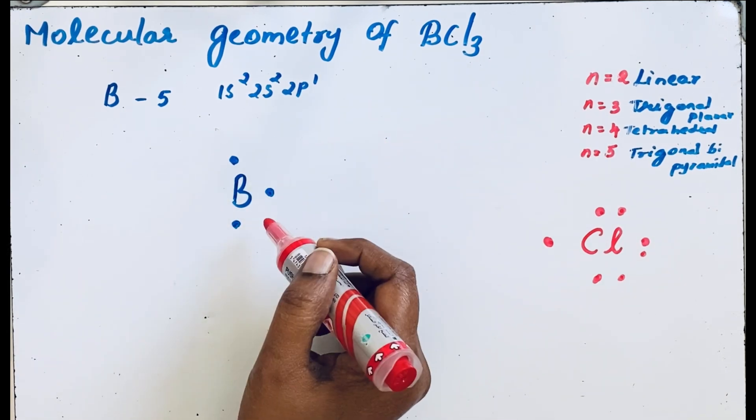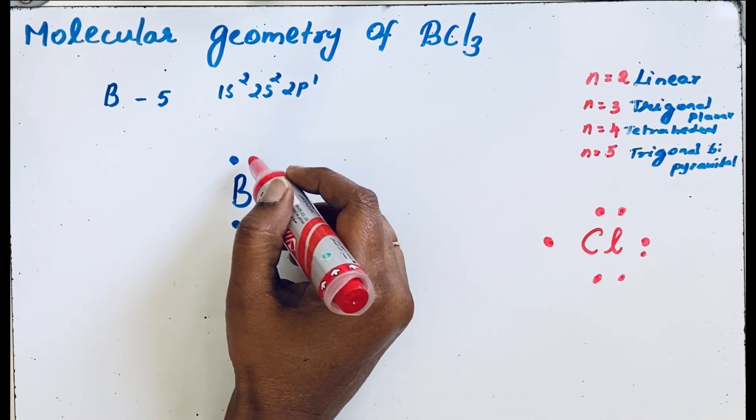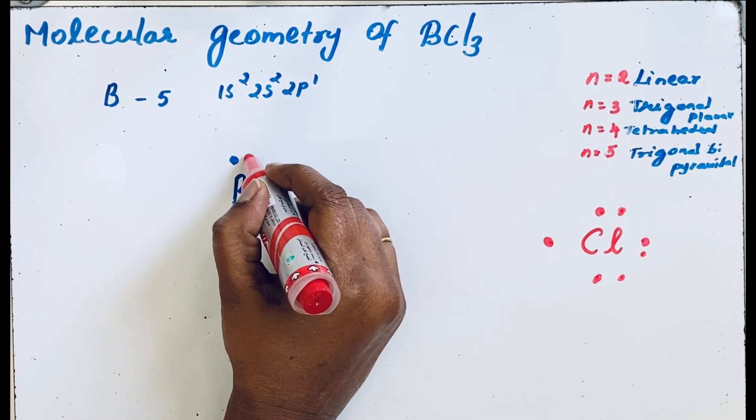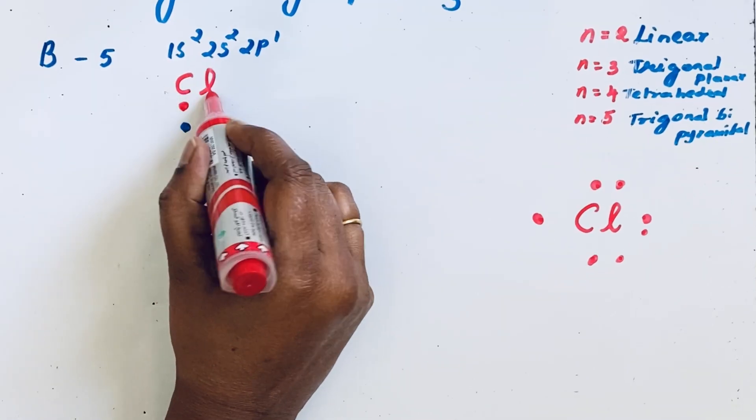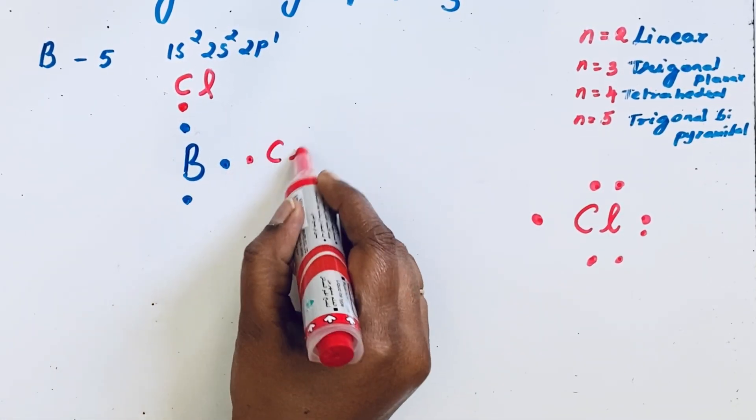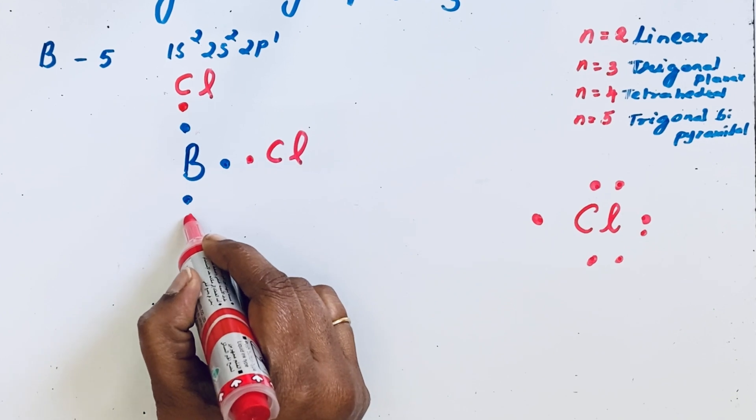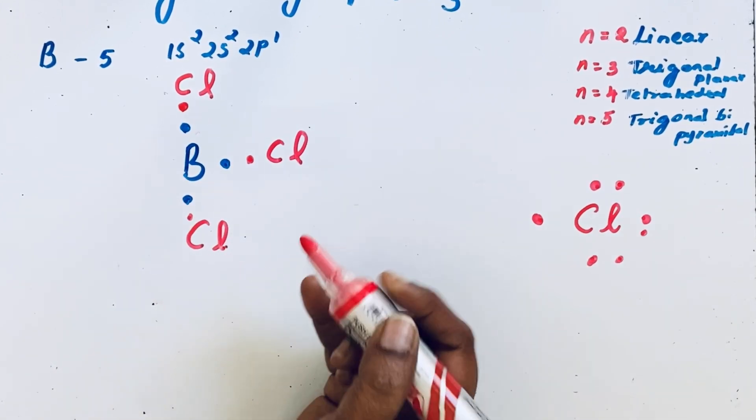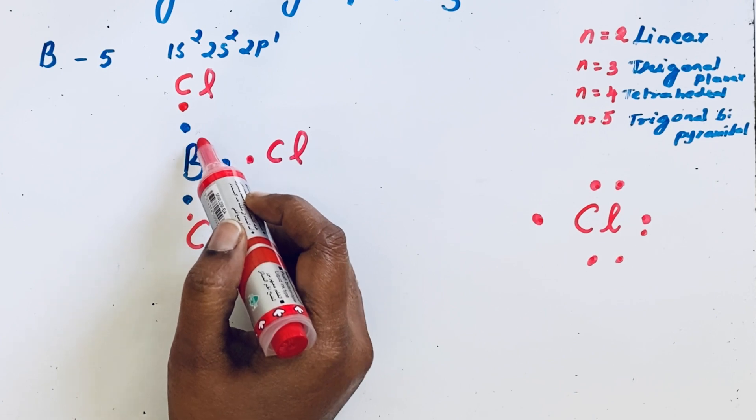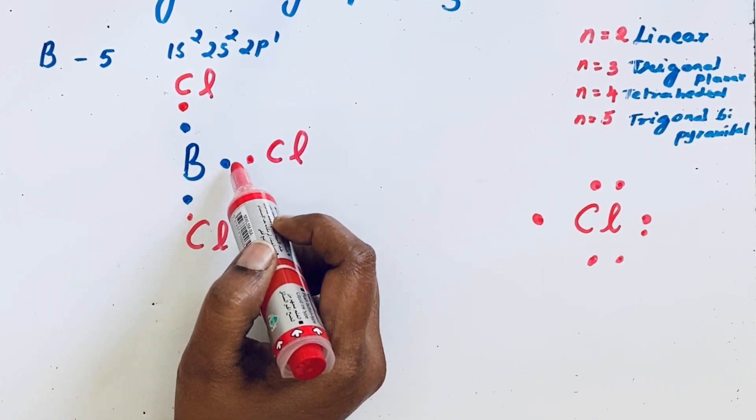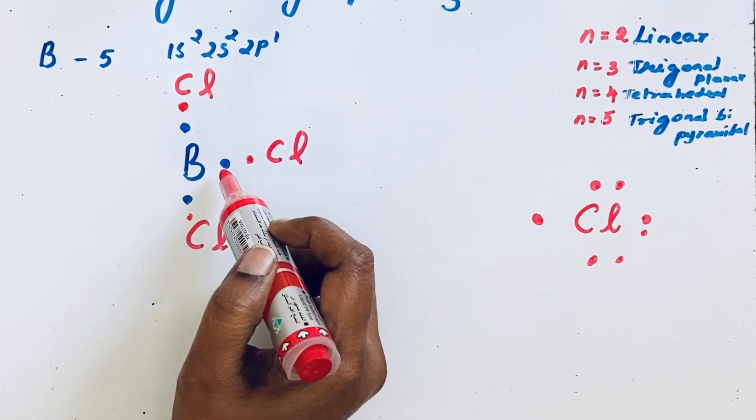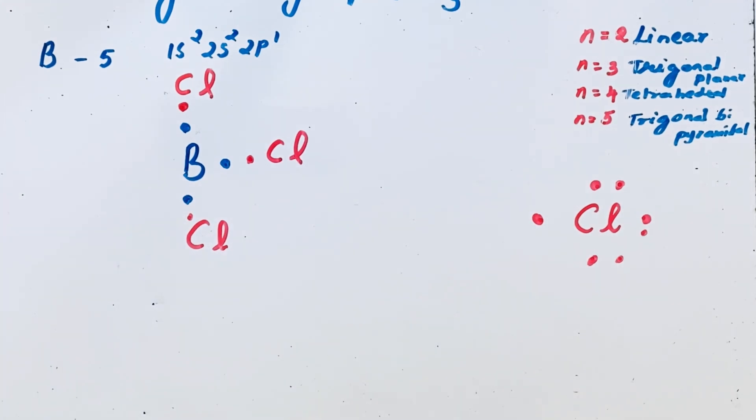Since there are three chlorine atoms, we can show that like one chlorine, then here second chlorine, then after that three chlorine atoms. But these three bond pairs repel each other due to negative charge and they try to maximize their distance.